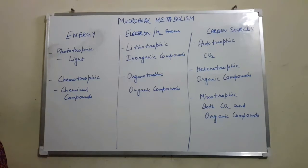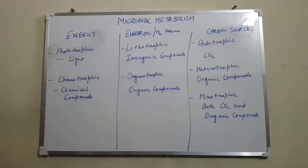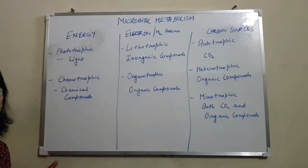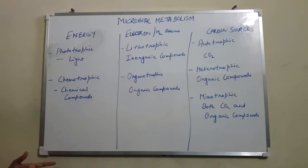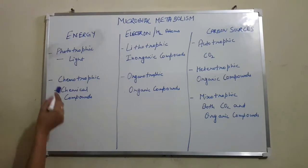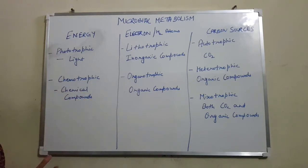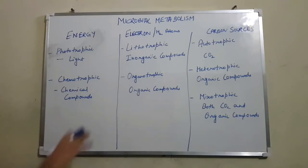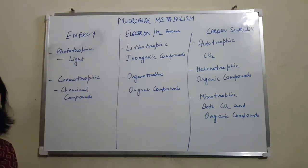Now let's look at the classes based on how energy sources are obtained. The first is phototrophic — a microorganism is called a phototroph when it obtains its energy from light. The other class is chemotrophic — a microorganism is chemotrophic when it obtains its energy from chemical compounds, which can be either organic or inorganic. So these are the two classes based on how they obtain their energy.